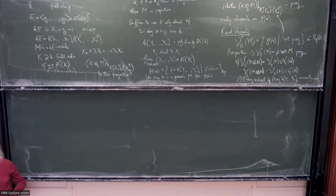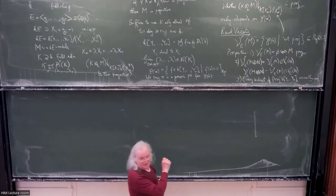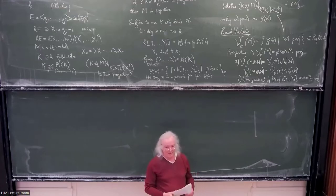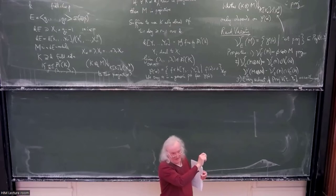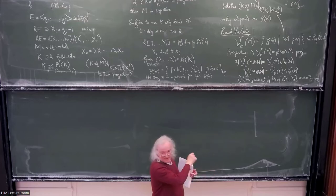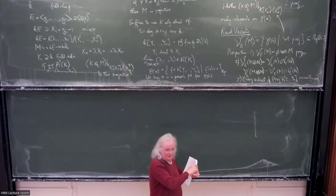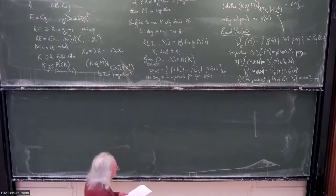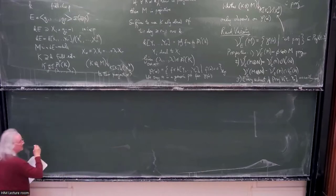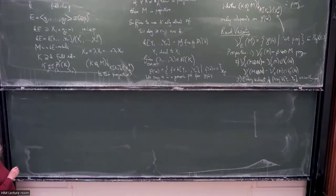To go from elementary abelian groups to general finite groups, there's a problem with this notion of rank variety: it depends on the choice of basis of the group. If you choose a different basis, you get a different set of linear combinations inside the group algebra. If you want to conjugate and embed inside a bigger group, you have a consistency problem. This is where the notion of pi points comes in, introduced by Friedlander and Pevtsova.